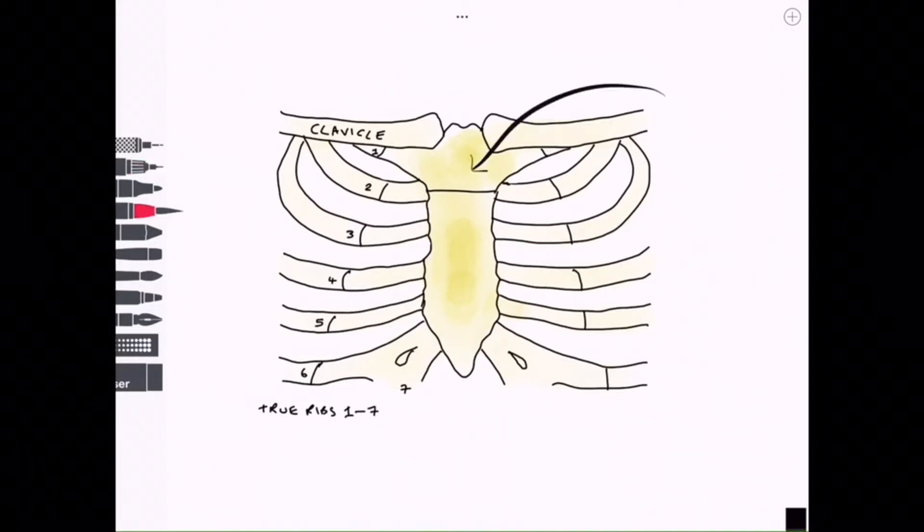We can label the manubrium of the sternum, articulates with the clavicle, forms a synthesis with the body of the sternum. The body of the sternum itself is flat but laterally has articular facets for costal cartilages.